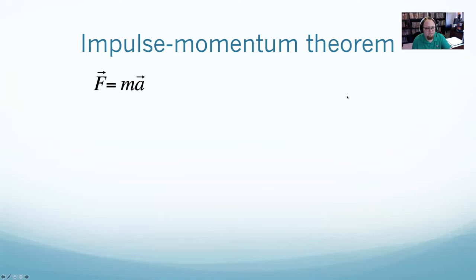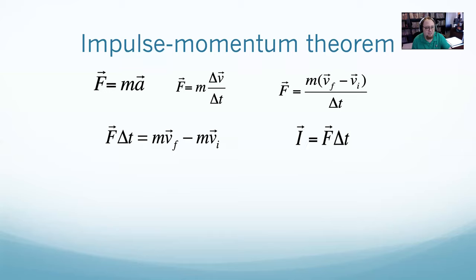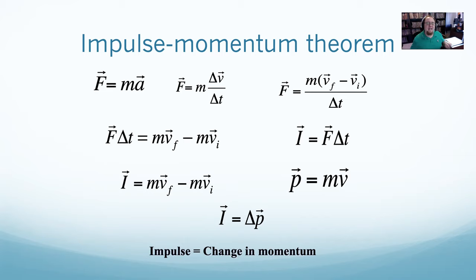Impulse and momentum are related in something called the impulse-momentum theorem, which we can derive pretty easily. Newton's second law is F = ma, and average acceleration is change in velocity over change in time, where that's V-final minus V-initial. If I multiply both sides by T, I get that force times time equals m·V-final minus m·V-initial. But force times time was impulse, which means impulse equals m·V-final minus m·V-initial. And MV is momentum — so impulse equals change in momentum.